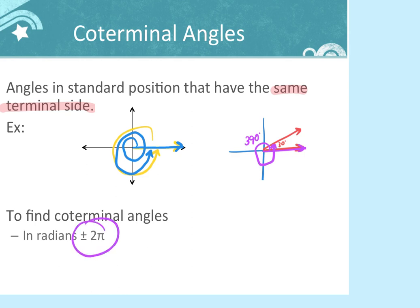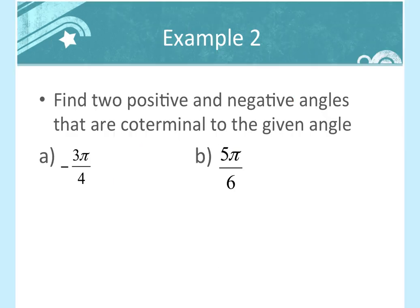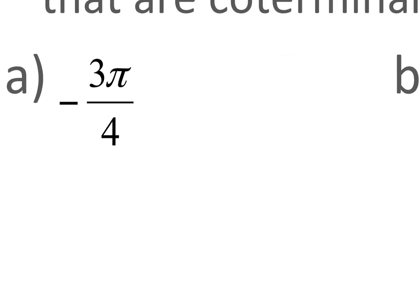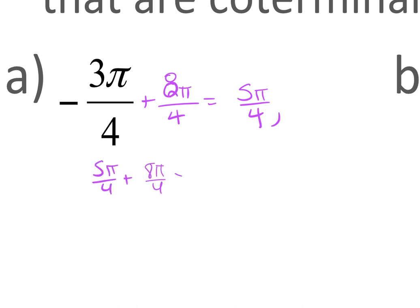In radians, we add and subtract 2π to find coterminal angles. To find two positive coterminal angles for negative 3π/4, I add 2π — which is 8π/4 — to get 5π/4. That's one positive coterminal angle. Adding 8π/4 again gives 13π/4. Those are my two positive coterminal angles. There's a lot of finding like denominators in this chapter.